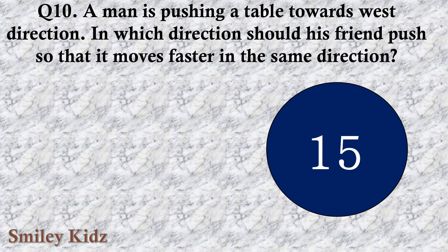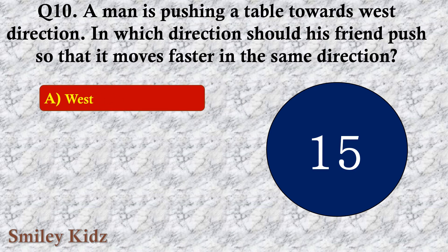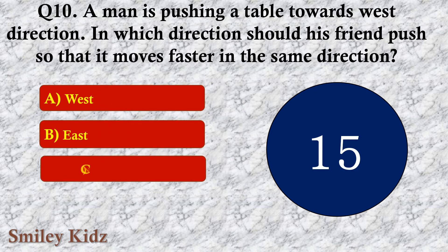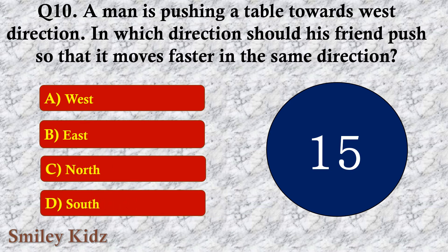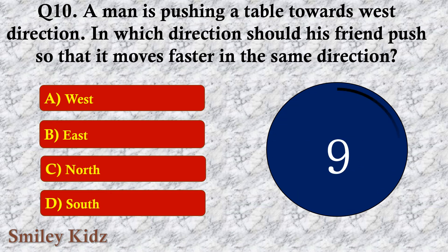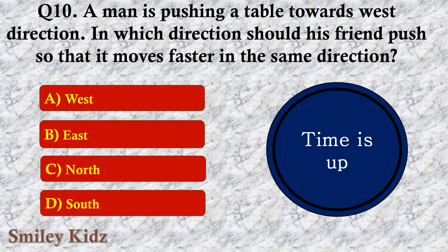Question number ten: A man is pushing the table towards west direction. In which direction should his friend push so that it moves faster in the same direction? The options are A. West, B. East, C. North, or D. South. The right answer is option A — West. His friend should push in the same direction, which is west.